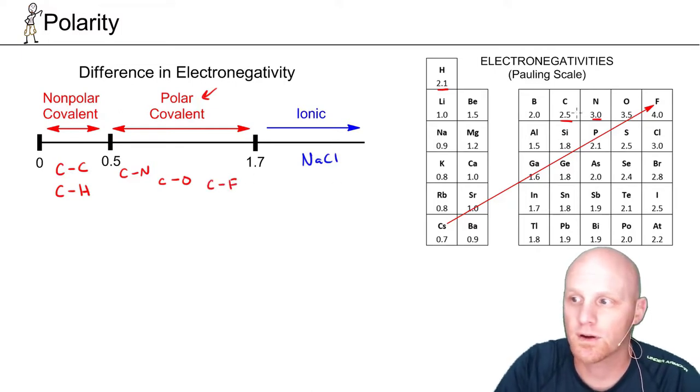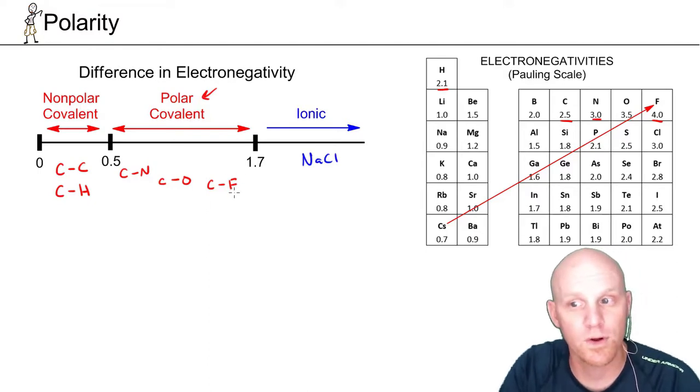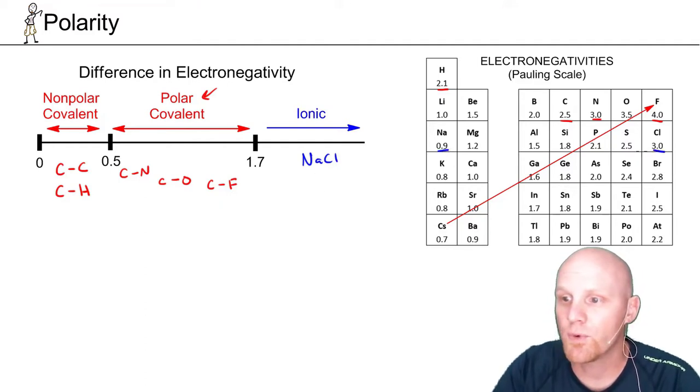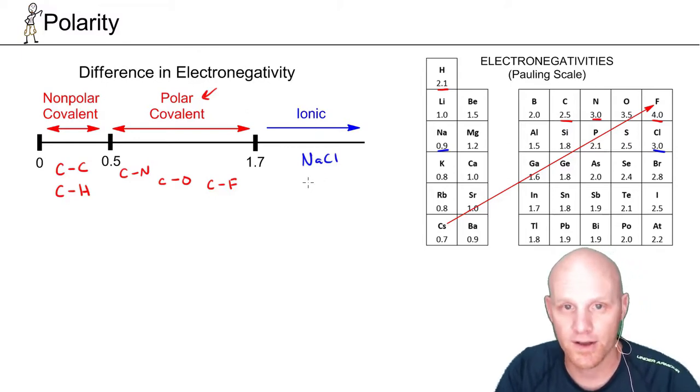And if we take this even a step further, carbon-fluorine, 2.5 versus 4.0, it's at 1.5 a little bit more, and it would have been considered ionic. And finally, if we look at that NaCl again like we did, sodium's 0.9, chlorine is 3.0, and that's a difference of 2.1 greater than 1.7. That's definitely ionic.